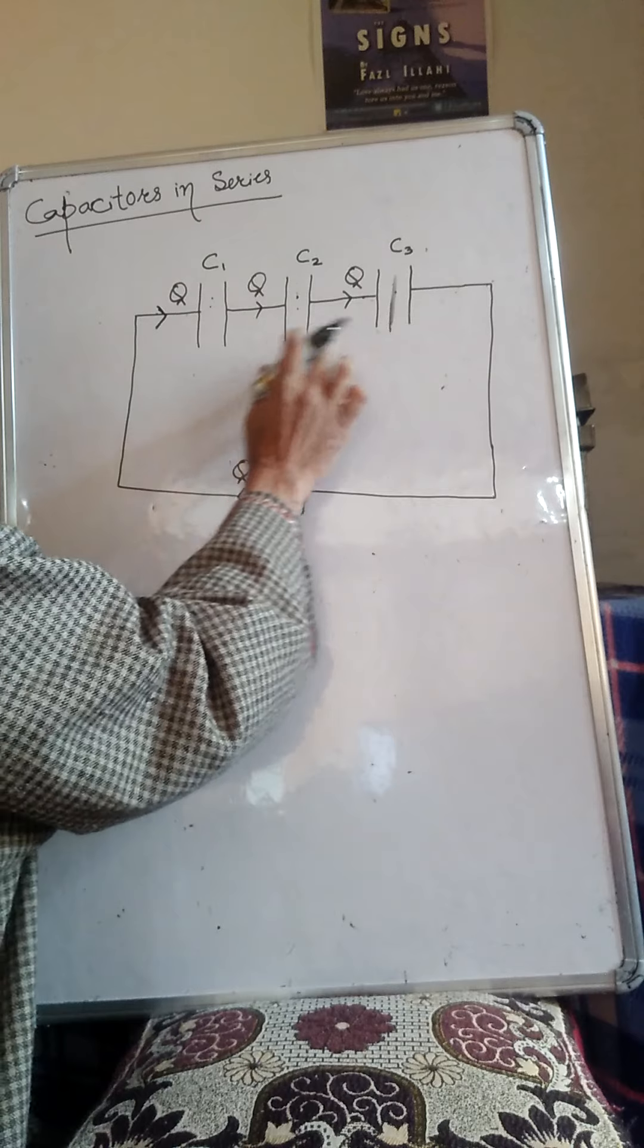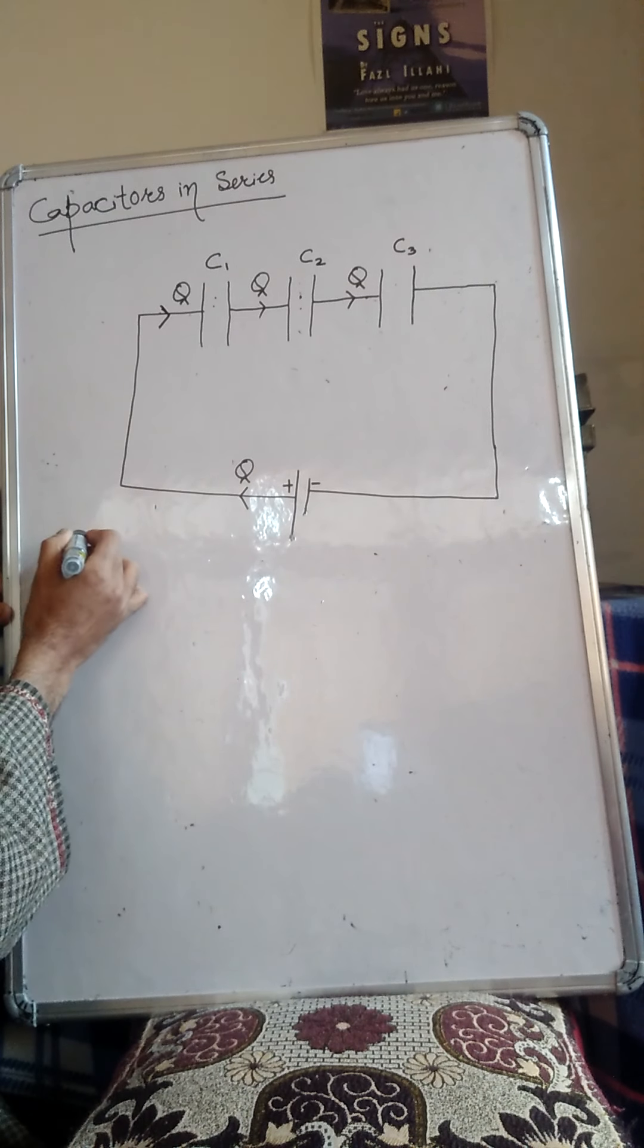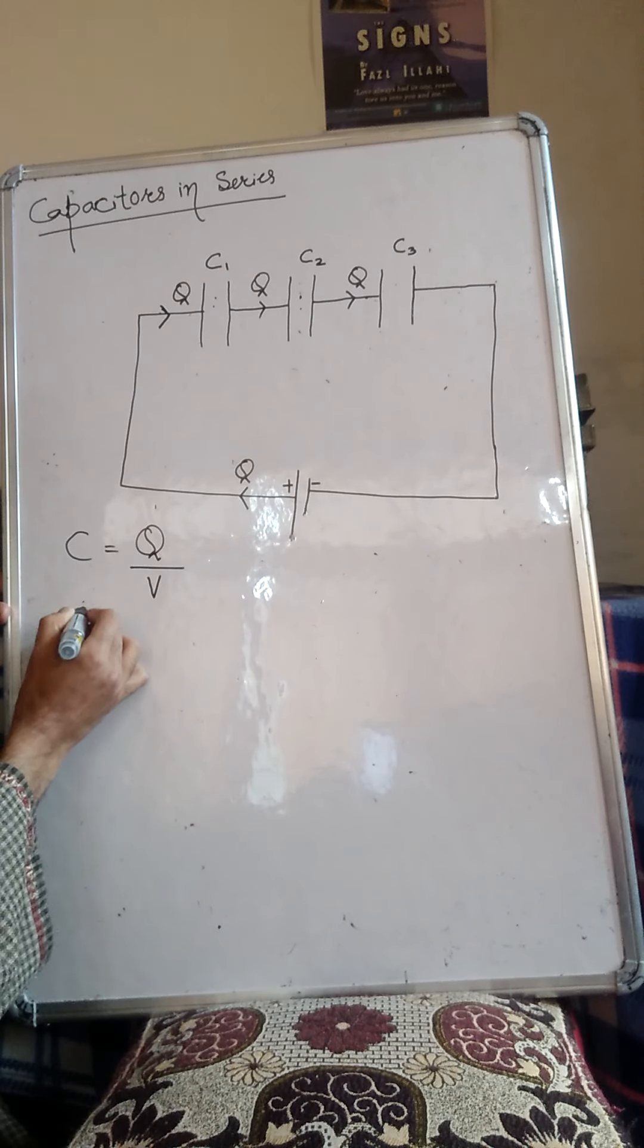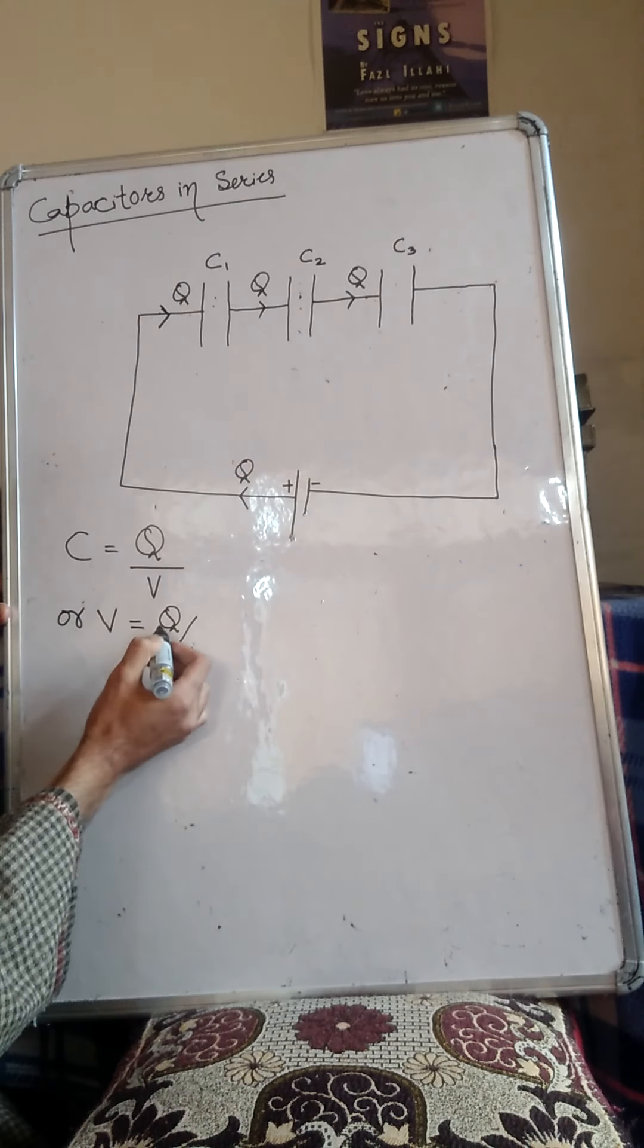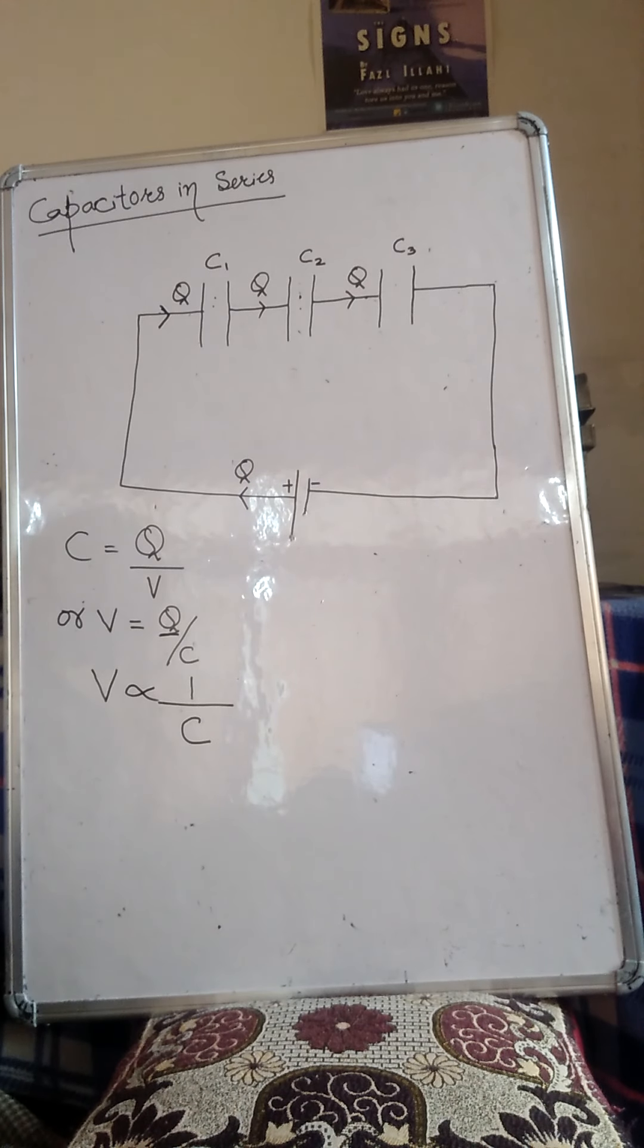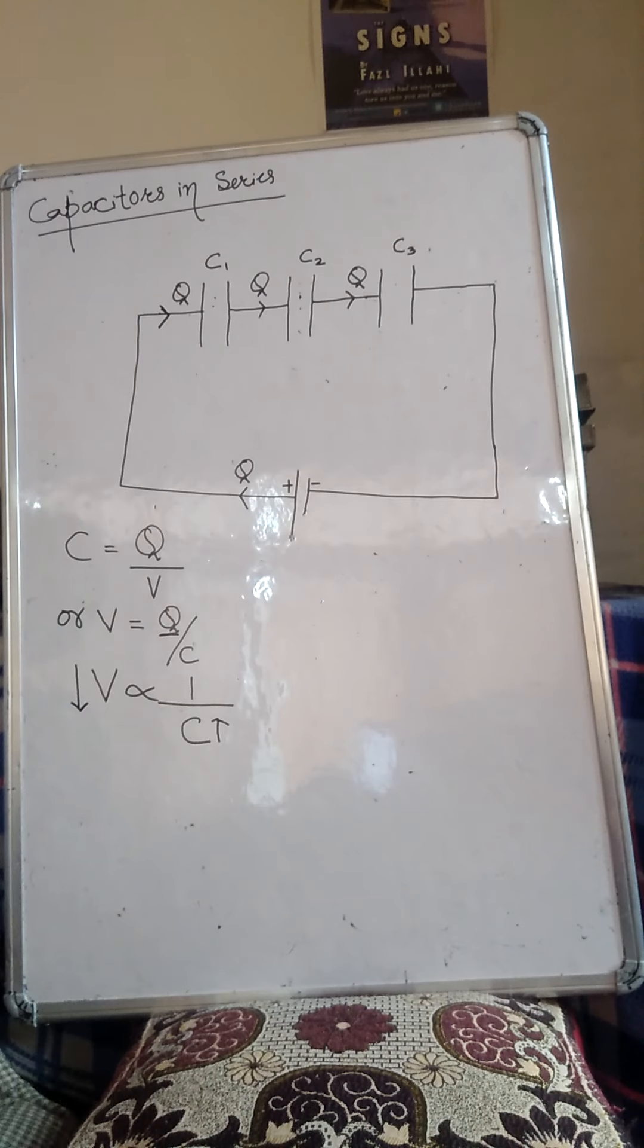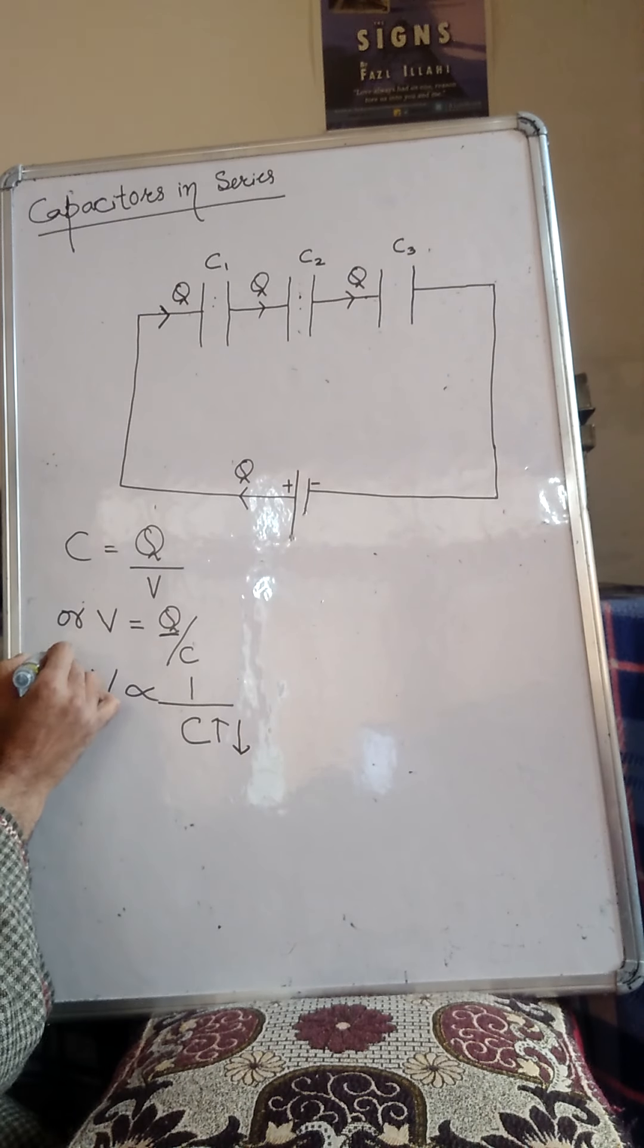But since their capacitances are different, the capacitor C equals Q by V. Now tell me, when the charge is same, then potential difference will vary inversely as capacitance. What does this mean? The charge flowing through all capacitors is the same. So tell me, whichever capacitor has more capacitance will have less potential difference. Whichever capacitor has less capacitance will have more potential difference across it.